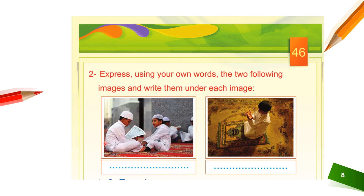This is an image of two children reading the Quran. You can write under this image: mosque, or what you think this image represents. You can write about Islam, you can write mosque. And this is a picture of someone doing Salah, so you can write something related to religion — he is doing Salah.